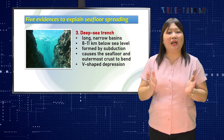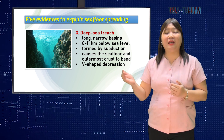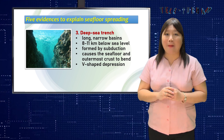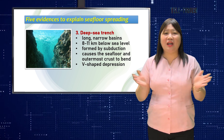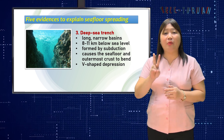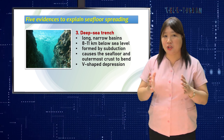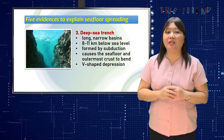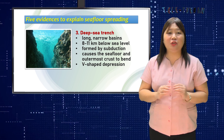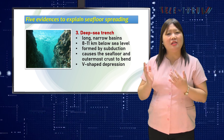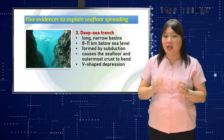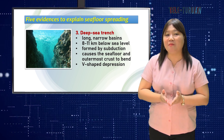Deep-sea trenches are long, narrow basins which extend 8 to 11 kilometers below sea level. Trenches are formed by subduction, in which two or more tectonic plates converge. An older, denser plate is pushed beneath the lighter plate and deep into the mantle, causing the seafloor and outermost crust to bend and form a steep, V-shaped depression.